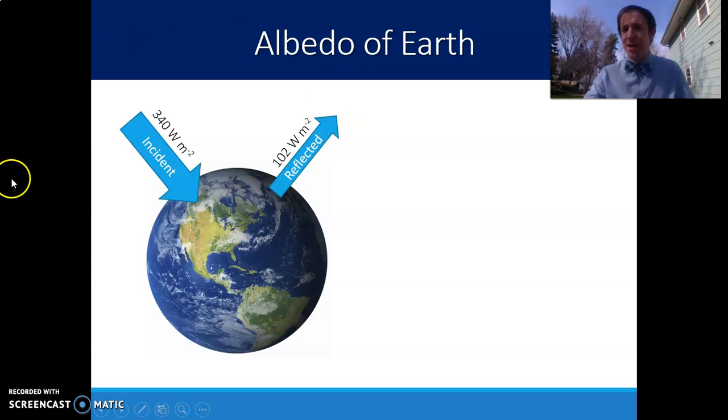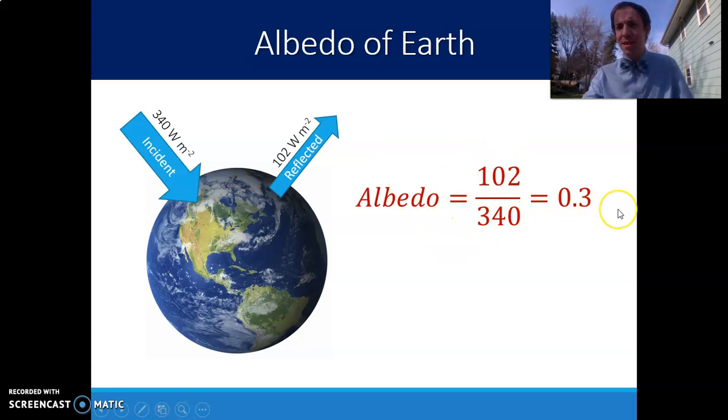Taking the intensity that's reflected divided by that average intensity that is received, we can calculate the albedo is about 0.3. That means about 30% of the light that is shining down on Earth gets reflected. That gets reflected from a variety of different places, which we'll talk about.